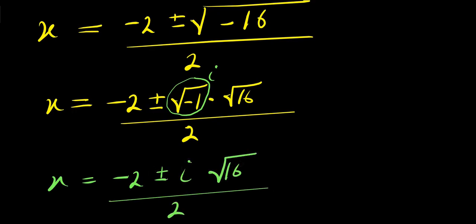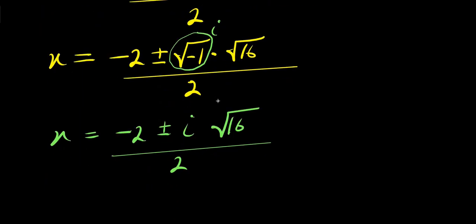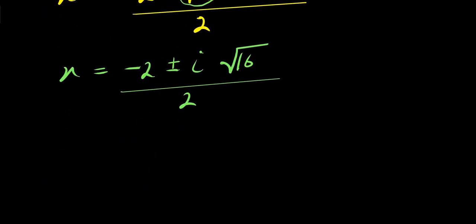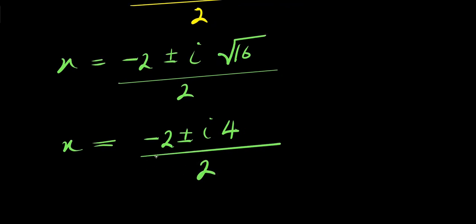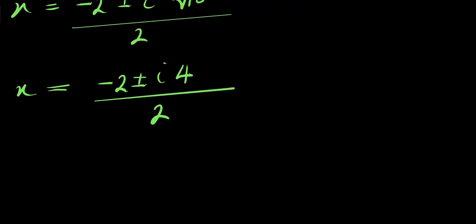From here, x equals negative 2 plus or minus i times 4, divided by 2. The 2s cancel, so x equals negative 1 plus or minus 2i.